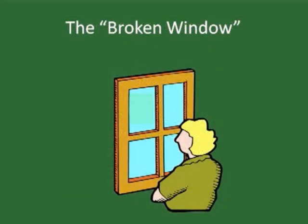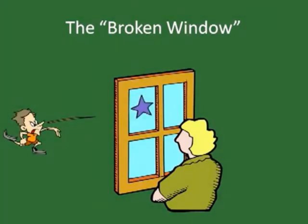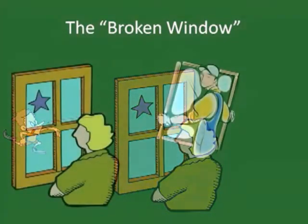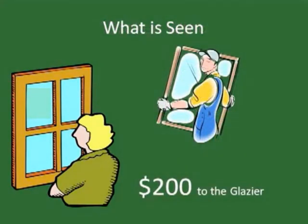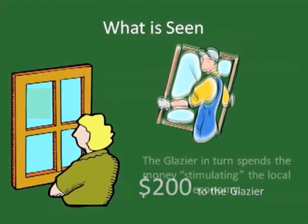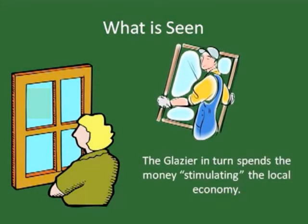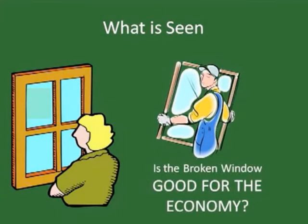This brings us to Bastiat's basic lesson. Envision a bakery with a front window. A young vandal throws a stone through the window, which becomes the cause of some economic effects. The window needs to be replaced. Clearly, what is seen is that the glazier has an economic benefit, and he, in turn, spends his newly obtained money benefiting others in the community. Should the vandal be punished or rewarded? After all, it seems that his action has been good for the local economy.